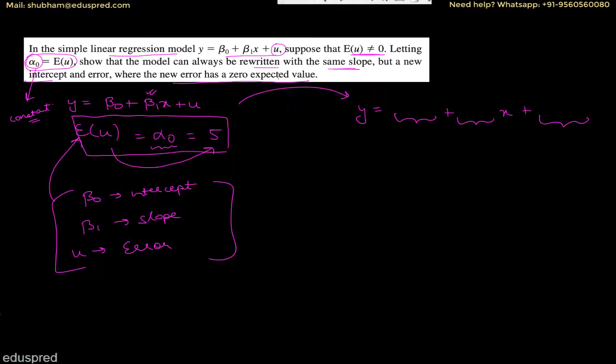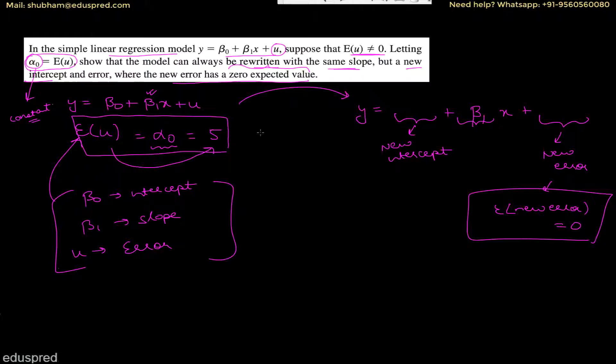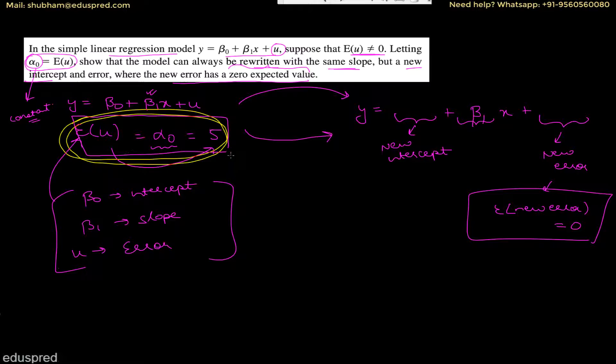They are saying we can rewrite the model with the same slope, so we will still have beta one, but a new intercept and a new error. The new intercept will not be equal to beta zero — it will be something different. And the new error will not be equal to u — it will be something different. But whatever this new error is, its expected value must be zero.